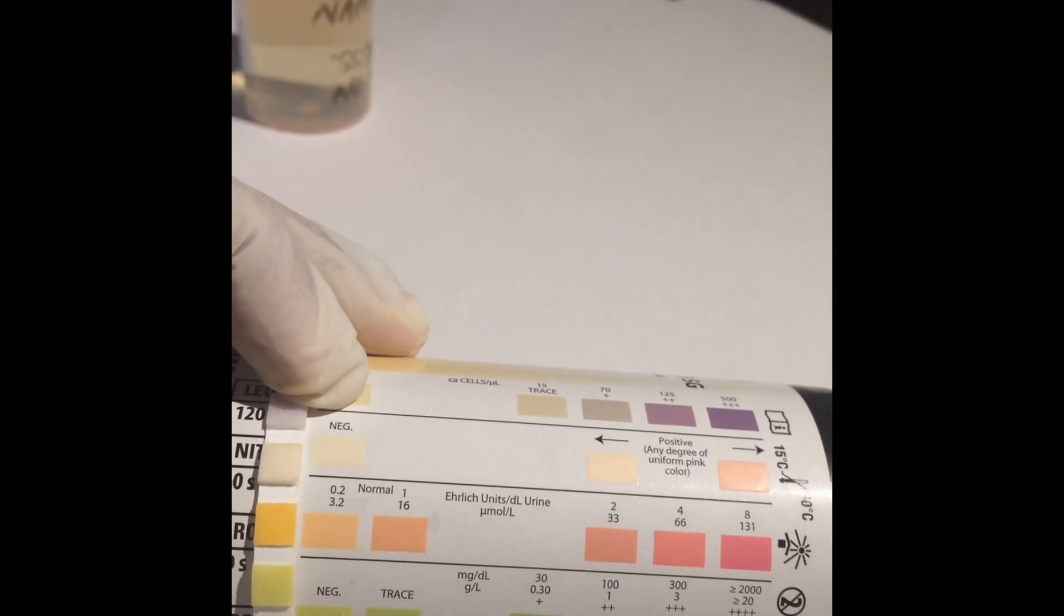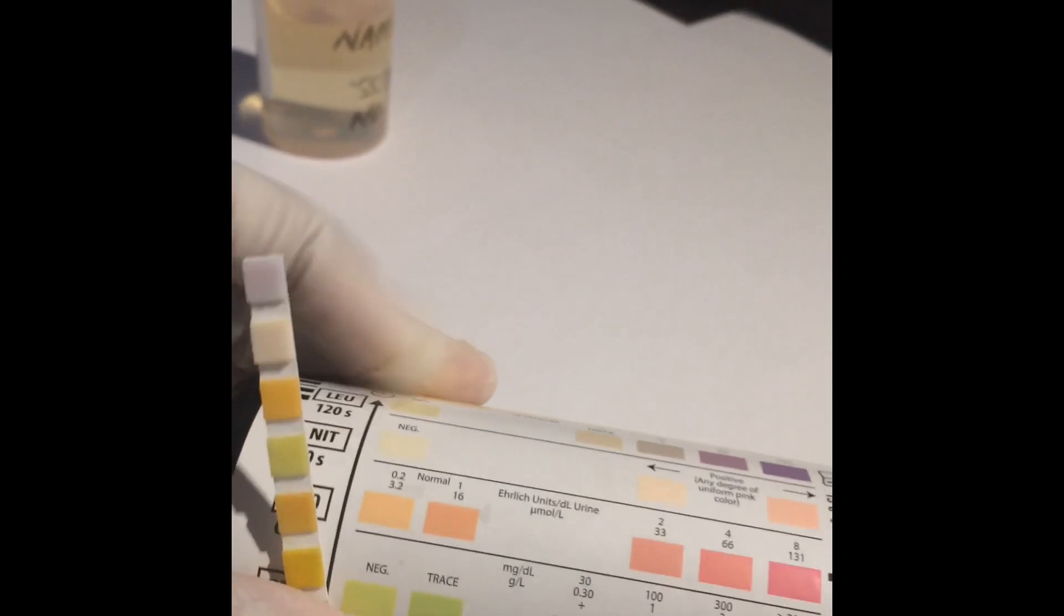Leukocytes, which is WBC, is purple. It looks like a plus one.